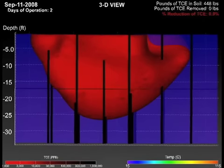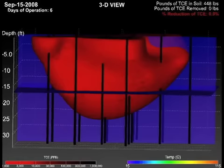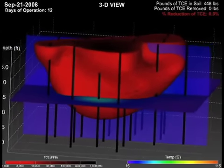The red mass represents the contaminant. The vertical black rods are the ERH electrodes that were co-located with recovery wells.